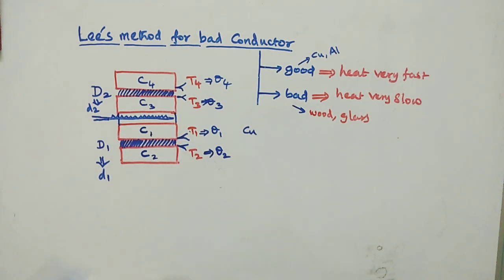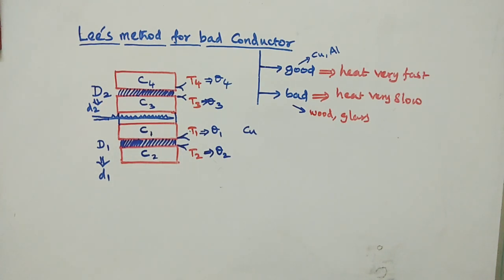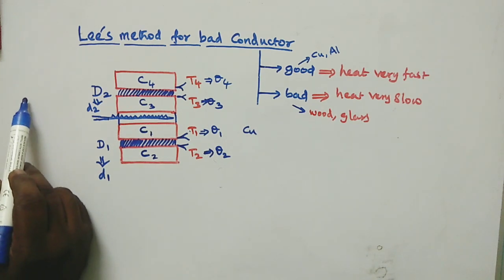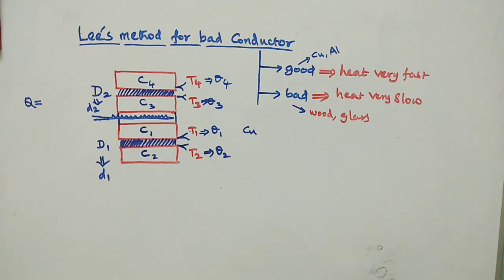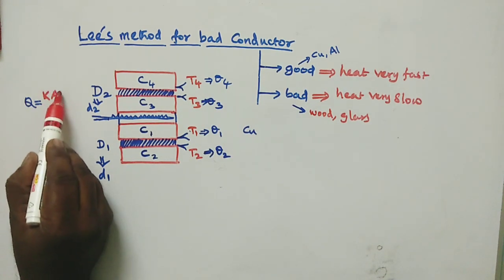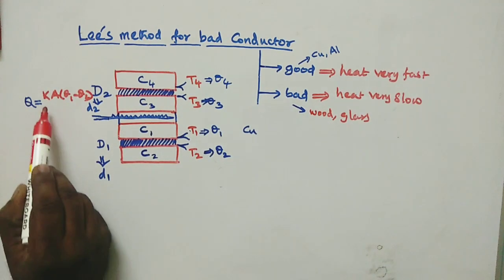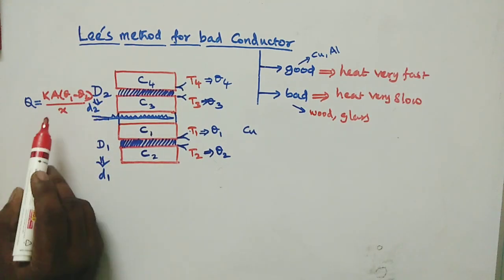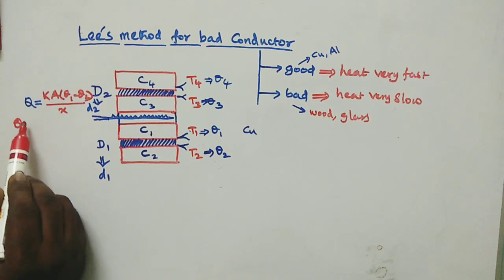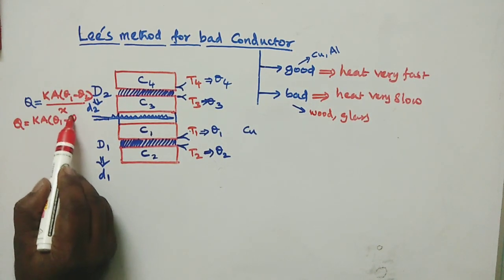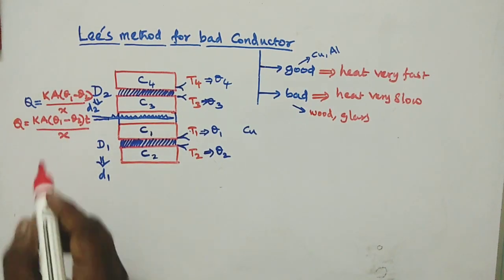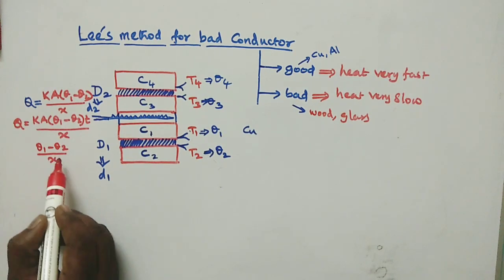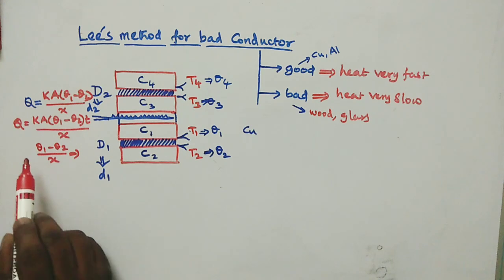We now calculate the thermal conductivity. The heat flow formula is: Q equals K times A times (θ1 minus θ2) times T, divided by x. Here, (θ1 minus θ2) divided by x is the temperature gradient.